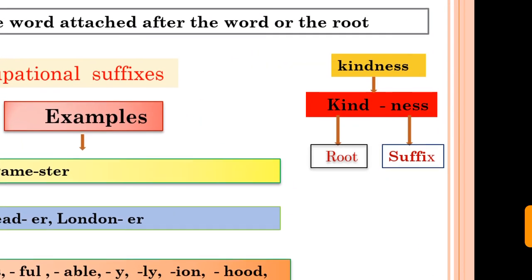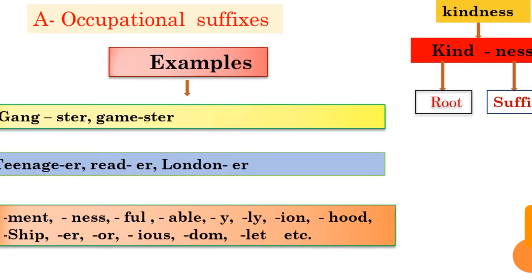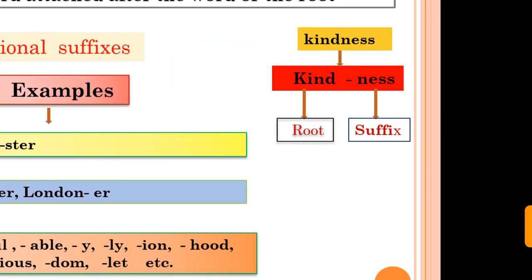Now here's an example: kindness. In kindness, kind is adjective. After adding ness, it became the noun, kindness. Kind is root and this root takes the suffix ness. We get another word kindness. Here is the list of some suffixes.